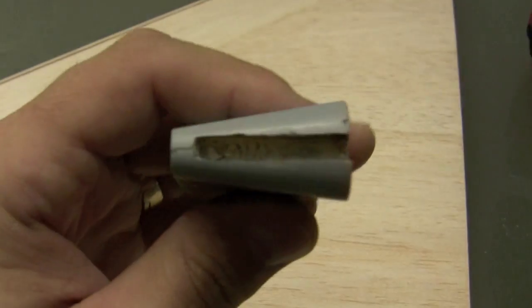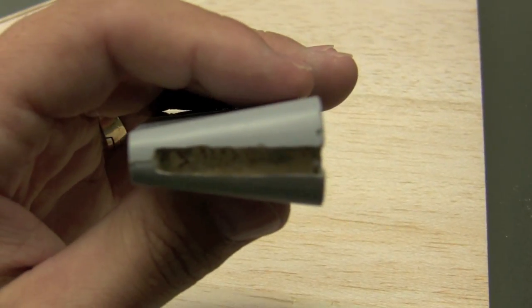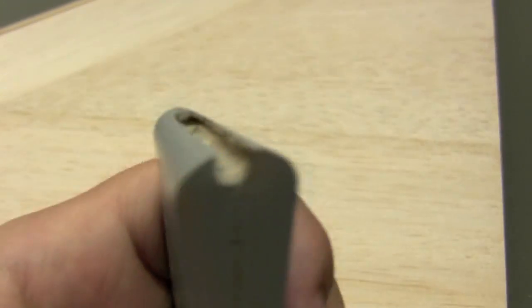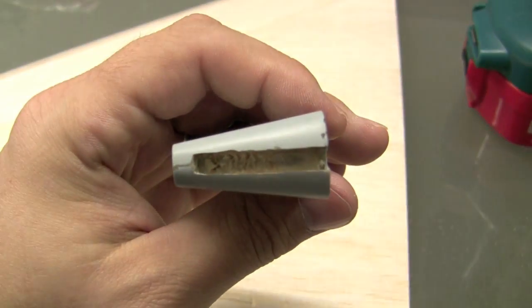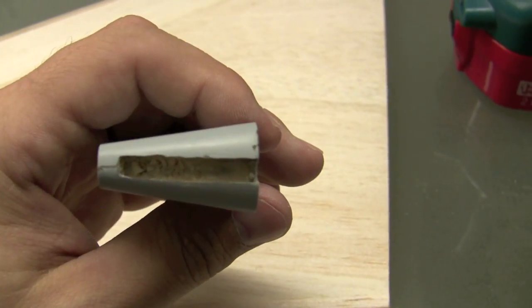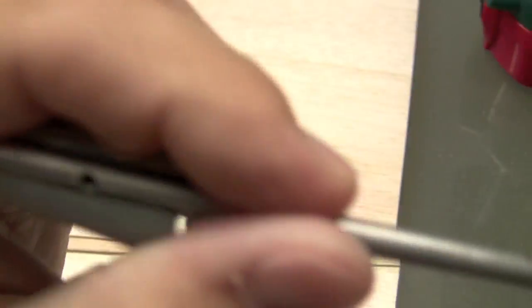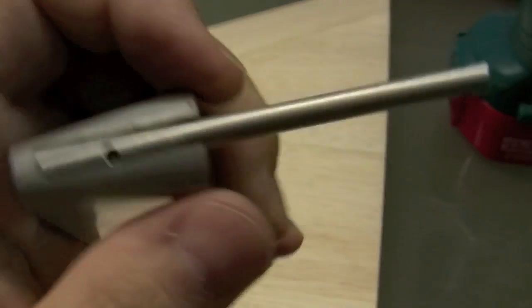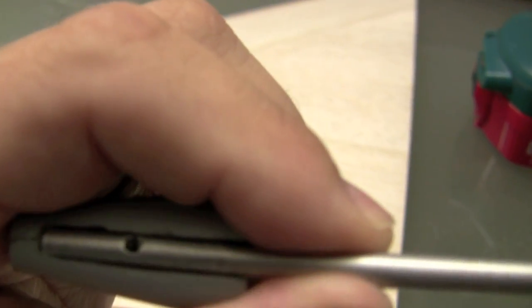Okay, so I've got our aileron end piece here completed. I've dremeled out the hole that's needed just like that. What that's going to allow is our aileron torque rod to fit in just a second. Okay, that fits in there just like that, and straighten that up a little bit.